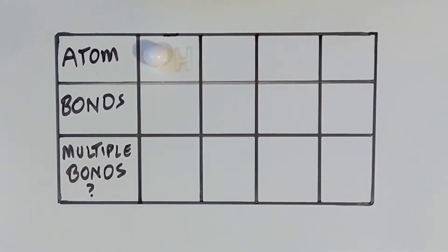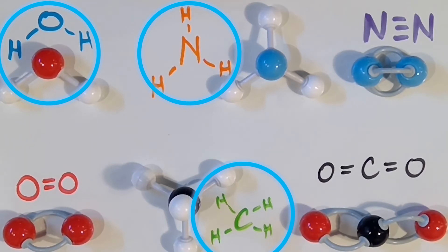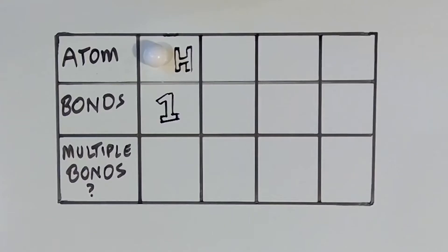We can start with hydrogen. What do you notice about hydrogen and how it bonds with other atoms? If you look carefully, you'll see that in every molecule that features hydrogen, the hydrogen has exactly one bond between it and the other atom. We find no exceptions to this rule, so we can safely conclude that hydrogen will always have exactly one bond. This also means that hydrogen cannot form multiple bonds, such as those double and triple bonds we saw earlier.